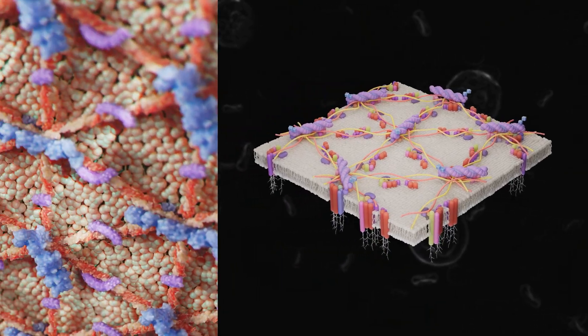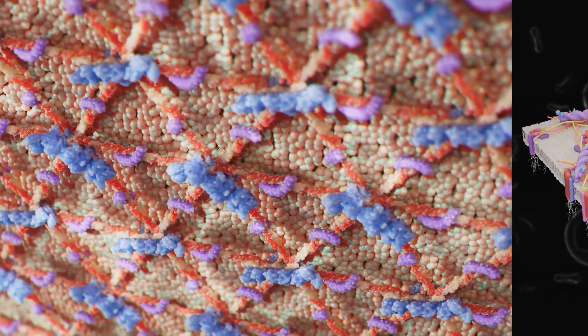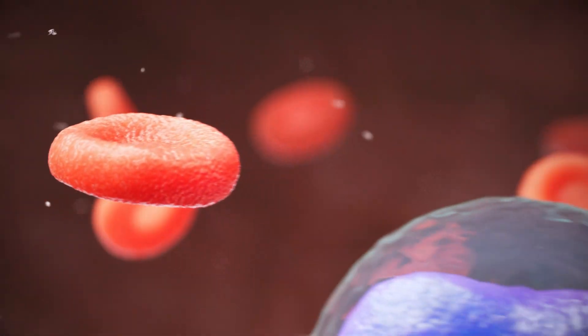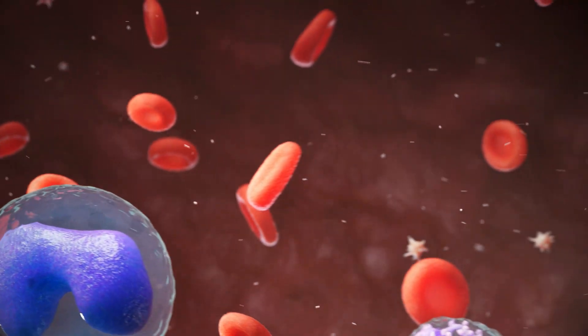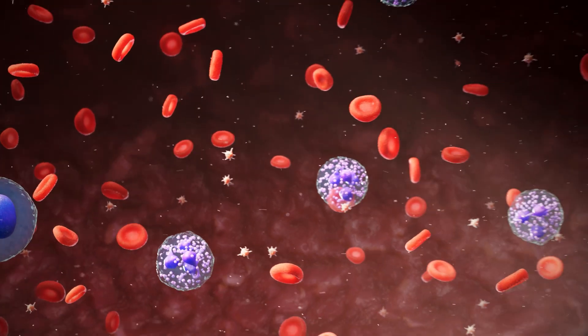The number of red blood cells in an adult can vary. On average, men have between 4 and 5 trillion red blood cells per liter of blood, while women have between 3.9 and 4.7 trillion.